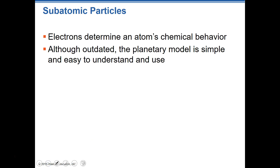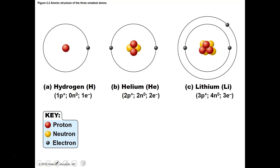Electrons do help determine an atom's chemical behavior. Although the planetary model is outdated, it's the easiest one for us to understand. When talking about atoms today, we'll mainly reference the planetary model because it's the easiest to learn from and build upon.